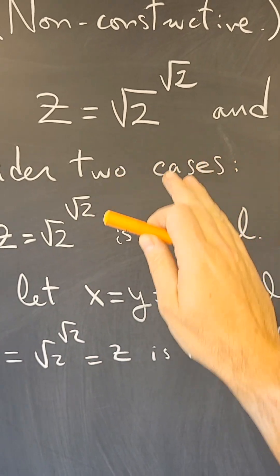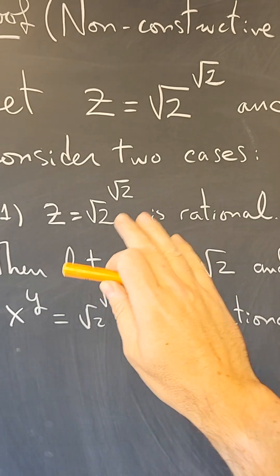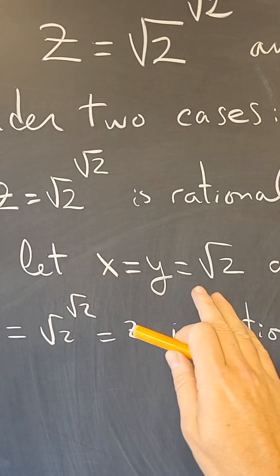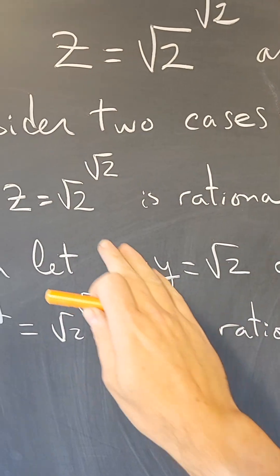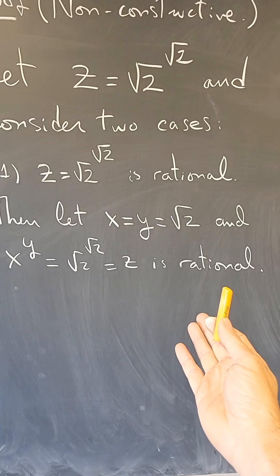If this number is rational, I'm not claiming it is rational. I'm just saying if it is rational, then, well, a square root of 2 is known to be irrational. So this is an irrational to an irrational giving me a rational number. And therefore I'm done.